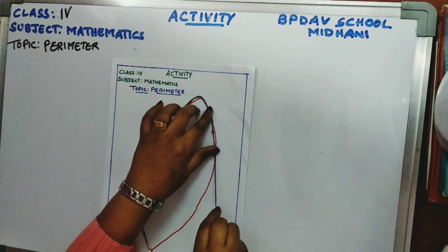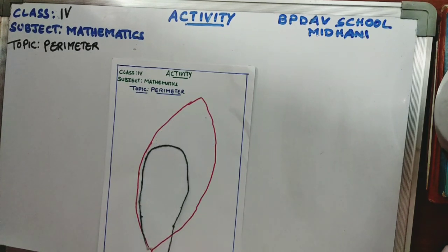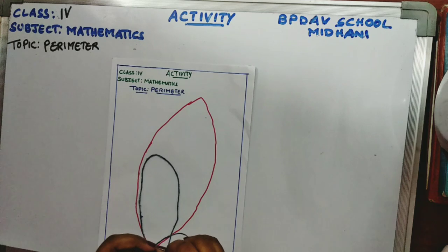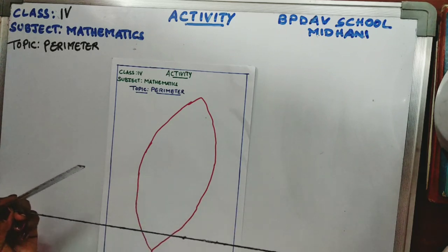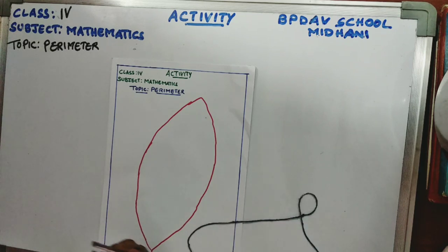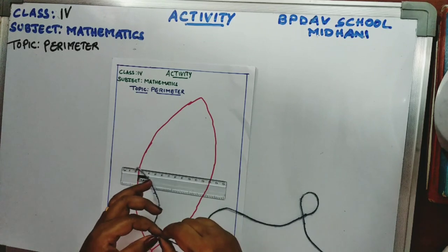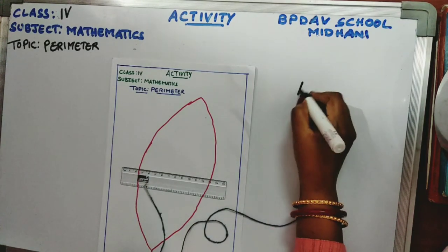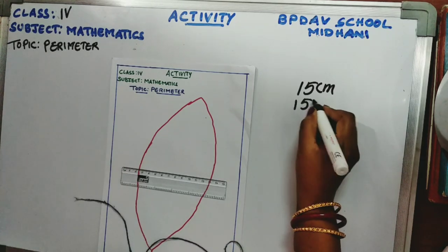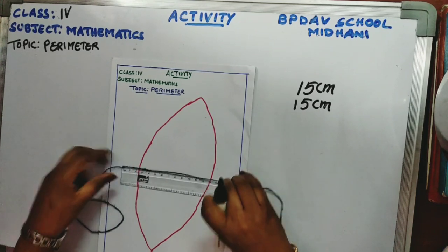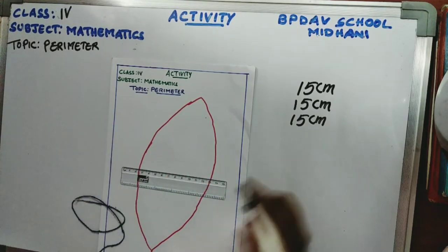Starting from one point, I am going to place the thread around the boundary. On the other side, I am going to tie a knot here — so this is the end. Now I will measure using the measuring scale. The centimeter scale is placed here — this is a 15 centimeter scale. From zero, the first section is 15 centimeters. Catch here. Then again, the next section is 15 centimeters.